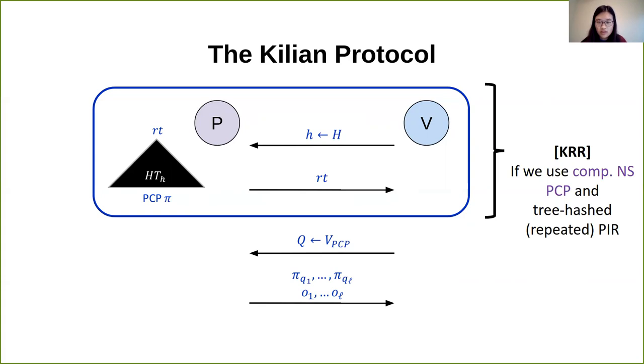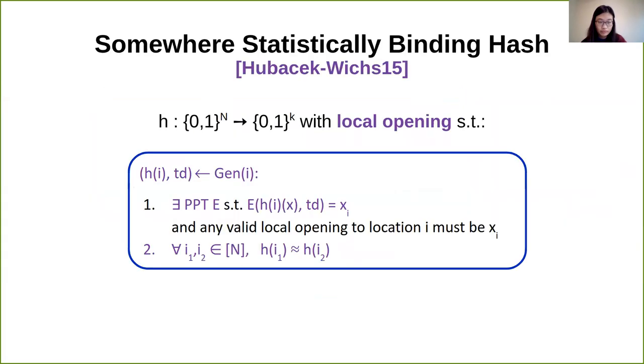Our observation is that the first two rounds of the Kilian protocol look a lot like an instantiation of KRR if the PCP is computationally non-signaling and if the hash H is a tree-hashed PRF scheme. The question is whether such a tree-hashed PRF scheme exists — and the answer is yes. It is called a somewhere statistically binding (SSB) hash.